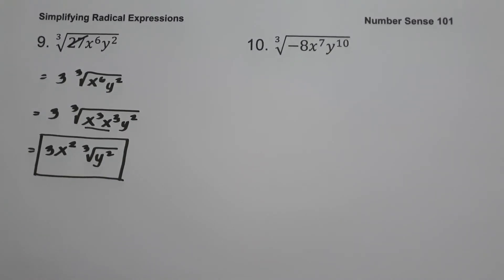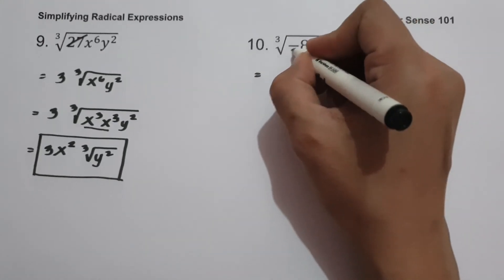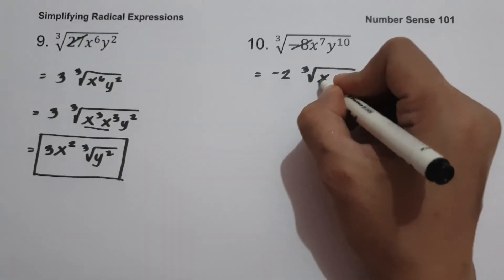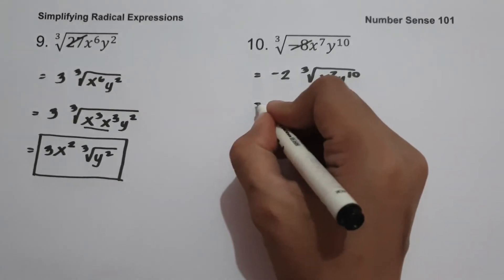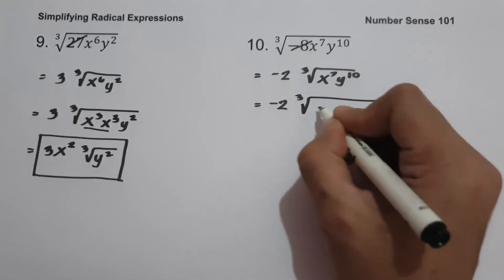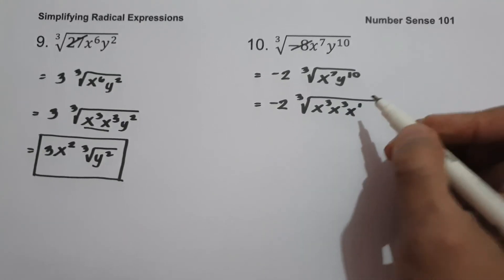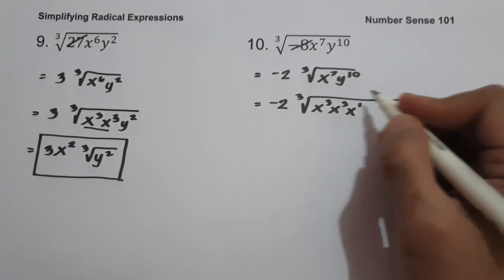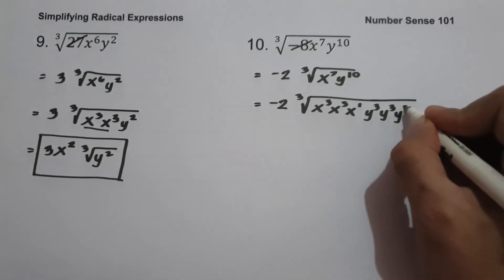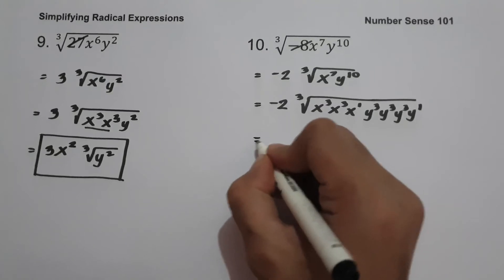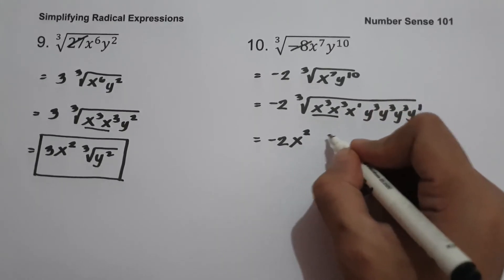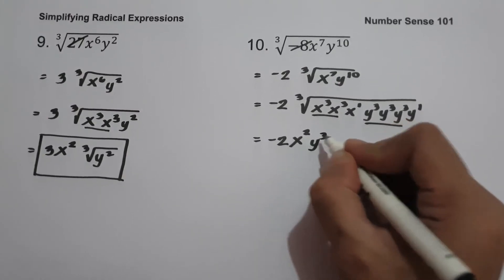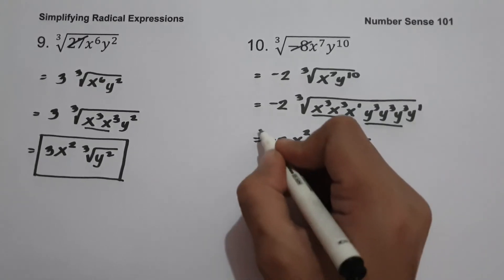On example number 10, we have cube root of negative 8x raised to 7, y raised to 10. The cube root of negative 8 is negative 2. We then divide the exponents of x and y by 3. For x raised to 7: x cubed, x cubed, and x raised to 1 — total is 7. For y raised to 10: y cubed, y cubed, and y raised to 4. We have 2 x-cubed terms giving x squared, and 3 y-cubed terms giving y cubed. So our answer is negative 2x squared y cubed, cube root of xy raised to 4.